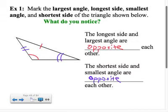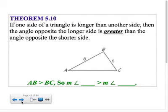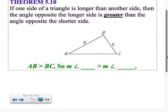And so that's the first big idea in today's lesson: if one side of a triangle is longer than another side, then the angle opposite the longer side is greater than the angle opposite the shorter side. So in this diagram, since we know AB is longer than BC, that automatically means that angle C has to be bigger than angle A.